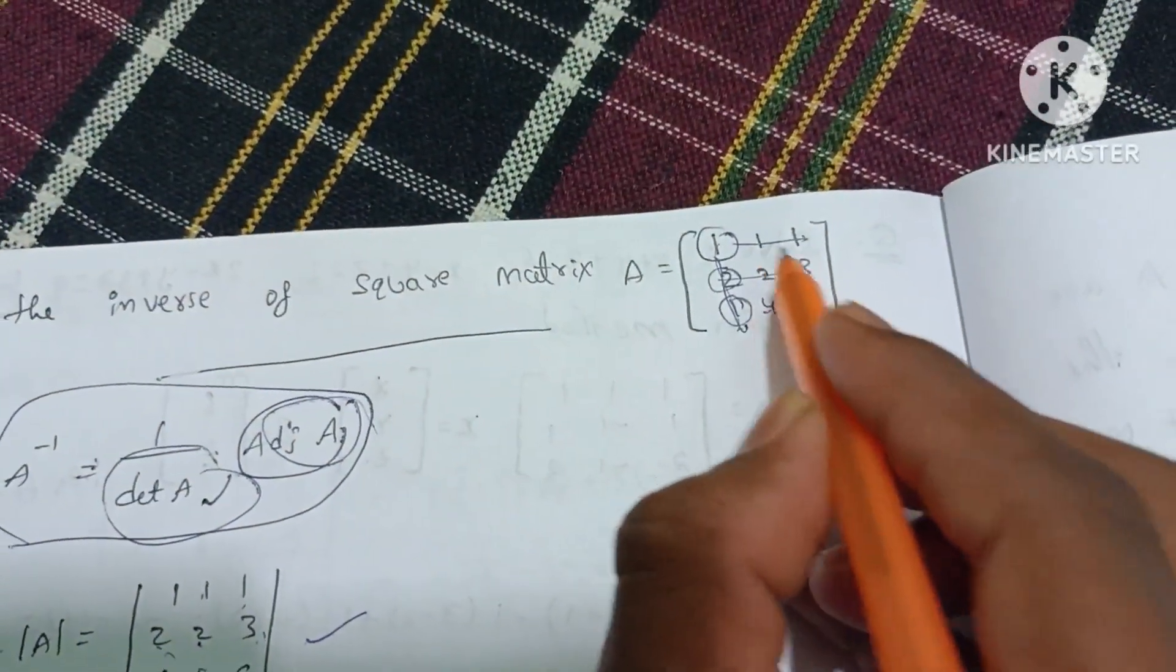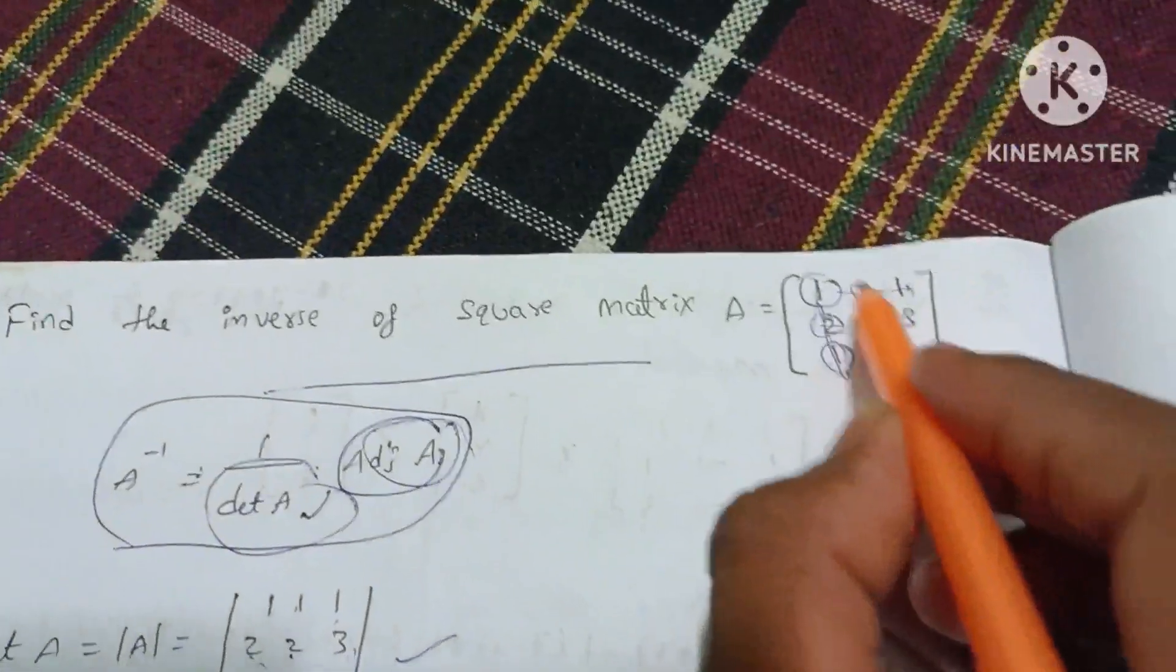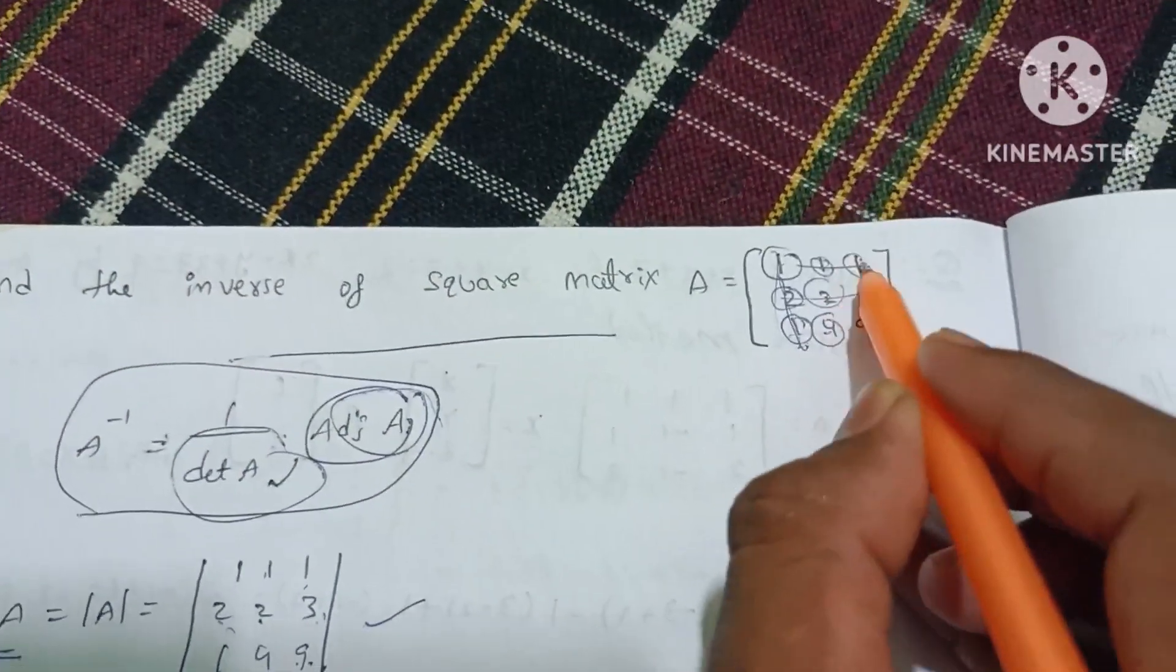Same thing, 1 into 1, 2 into 4, 4 into 4, 9. This is the matrix.